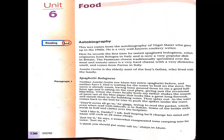Unit 6 food — autobiography. We are told already the difference between biography and autobiography. A biography is written by another person about someone's life events, whereas in an autobiography the person writes about himself. Auto means self. This text comes from the autobiography of Nigel Slater, who grew up in the 1960s and is a very well-known cookery writer.